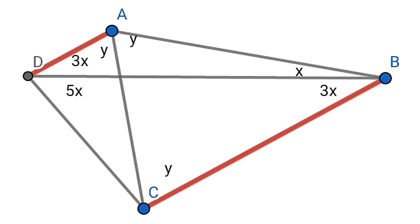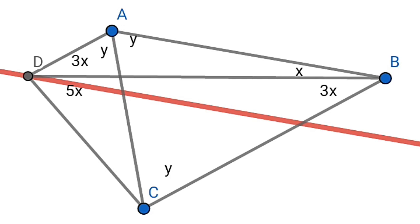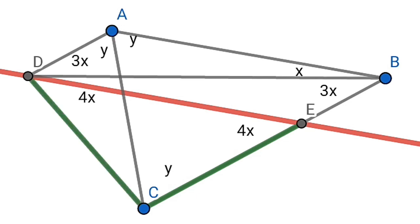This angle would also be equal to angle DAC, which is also Y. Now draw a parallel line from point D to AB which touches BC at point E. So ADBE is a parallelogram. Now angle EDC would be 4x, and angle DEC would also be 4x, because angle ABE equals x plus 3x, that is 4x.